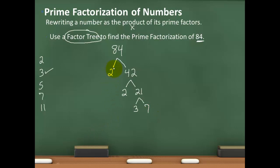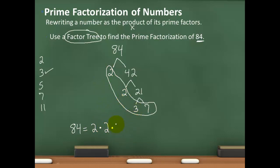Looking at the prime numbers in my factor tree, I have 2, 2, 3, and 7. Those numbers allow me to write 84 as a product of prime numbers: 2 times 2 times 3 times 7. So 84 equals 2 × 2 × 3 × 7. If I multiply: 2 times 2 is 4, times 3 is 12, times 7 is 84. That is how you find the prime factorization of a number.